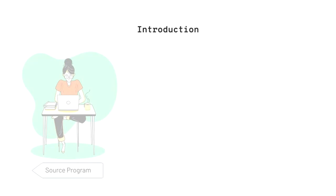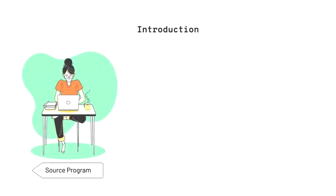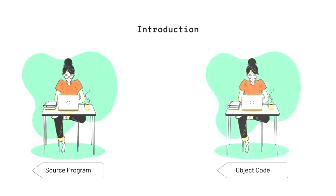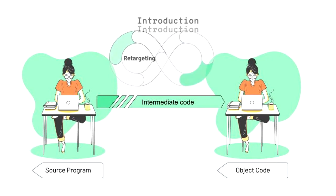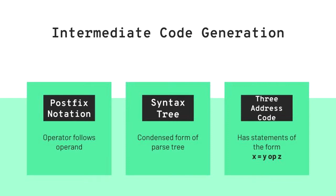In translation of a source program, i.e. the code that you write, to an object code representation, i.e. a code that the machine understands, a parser may generate an intermediate representation, which opens room for retargeting of code and its optimization. There are three ways to write intermediate code: postfix notation, syntax tree, and three address code.